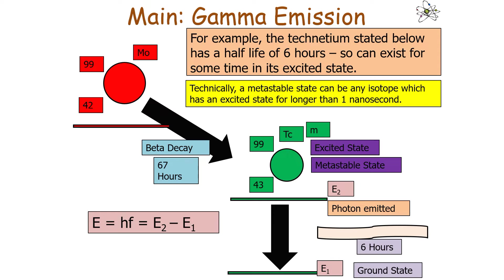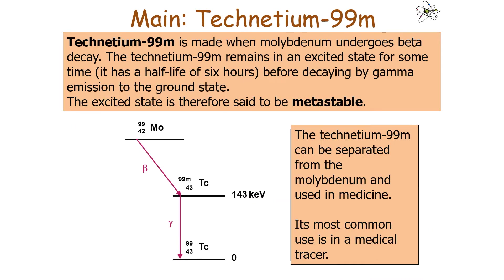The most famous example of an isotope which exists in metastability is technetium-99. Technetium-99 is made when molybdenum undergoes beta decay. This technetium remains in an excited state for some time, with a half-life of about 6 hours before decaying by gamma emission to the ground state. Therefore, this excited state is said to be metastable.